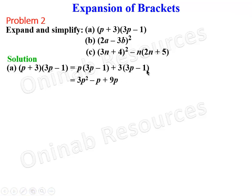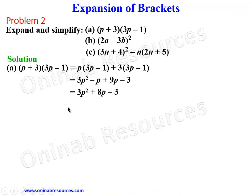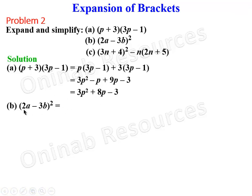Plus 3 times minus 1 gives minus 3. Simplifying the middle terms: minus p plus 9p gives plus 8p. So the final answer for part a is 3p squared plus 8p minus 3.